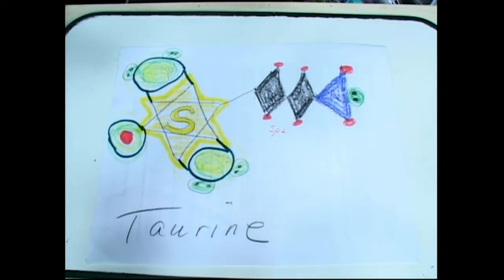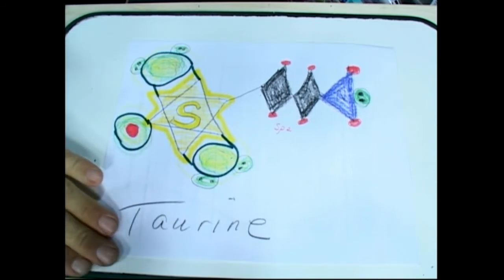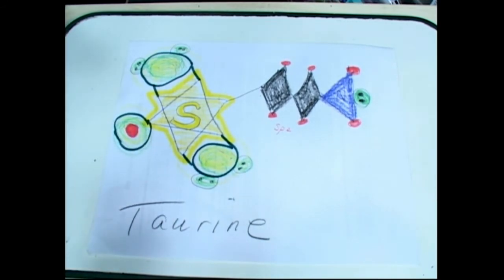So this is our new taurine. This is the amino acid the cats need to eat meat for. Dogs can make this.